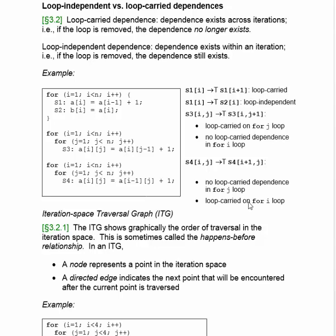In this video, we want to talk about loop-independent versus loop-carried dependences. This will help us decide which iterations of which loops can be executed in parallel. A loop-carried dependence means a dependence exists across iterations. If you take out the for statement before the loop, then the dependence no longer exists.